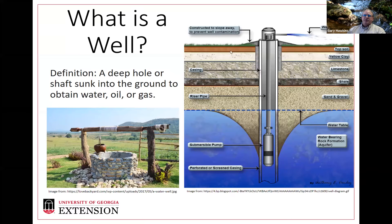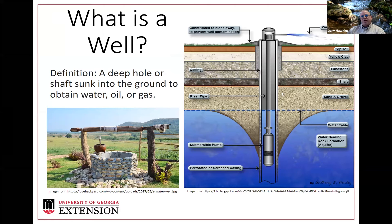You can see here the topsoil, and then depending on where you are in the state of Georgia or across the nation, the limestone, shell, sand, and gravel layers will vary. In north Georgia, you'll have a small area of topsoil and then hit limestone and granite, whereas in south Georgia most of that will be a limestone, sand, and gravel aquifer. The blue area shown here is what we call the aquifer — the well goes down into it, and a submersible pump is installed in that casing to pump the water out.